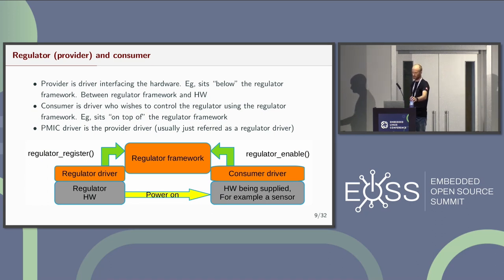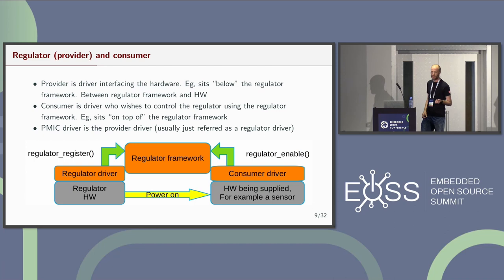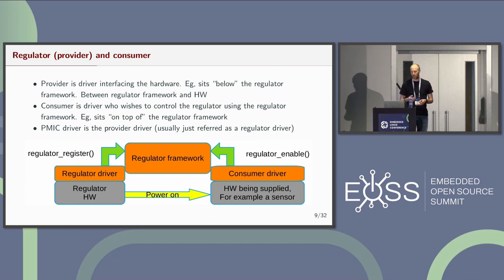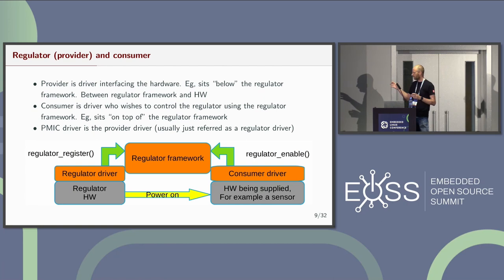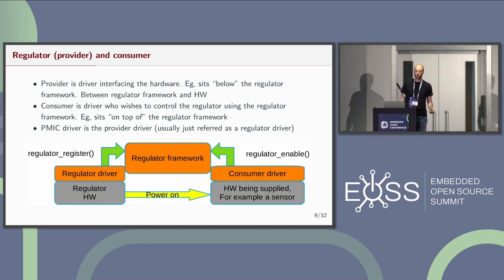The regulator subsystem is essentially two-sided: on one hand there is the provider device — the regulator device — and then there are the consumers. The regulator framework sits between the actual regulator device, which controls the regulator hardware, and the devices consuming power from the regulator. Consumer drivers can request enabling or disabling power, or sensing voltages. The framework sits between them because there might be multiple devices connected to one regulator, requiring bookkeeping about who needs the regulator enabled so you don't disable power from devices still in use.